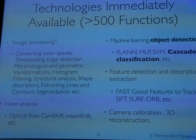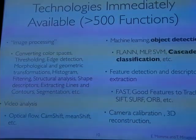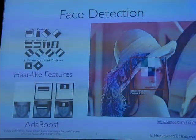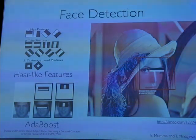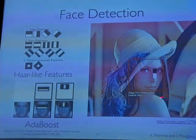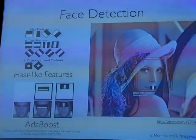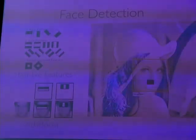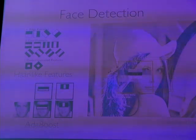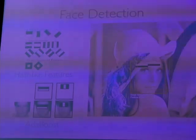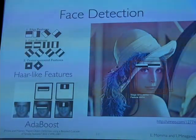The next slide shows an example of cascade classification for face detection. Basically, it chooses Haar-like features and AdaBoosts a cascade classifier. By learning, the positions of Haar-like features in the scanning region are determined. If all determined features are matched, the classifier detects the region as a face.